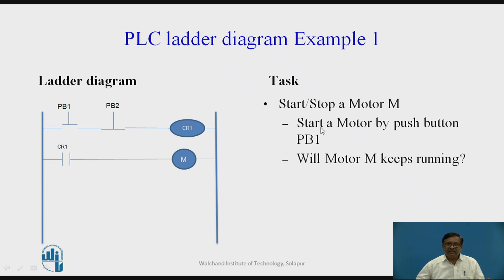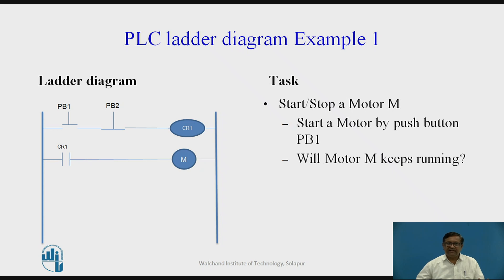Since PB1 is a push button, if you remove your finger from it, the contact opens, CR1 de-energizes, its contact opens again, and the motor stops. So the question is: will motor M keep running? No, because as soon as you release the push button, the motor gets stopped. So how can we modify this ladder diagram so that I can start the motor with one button and keep it running until stopped by another button? That is what example 2 will discuss.